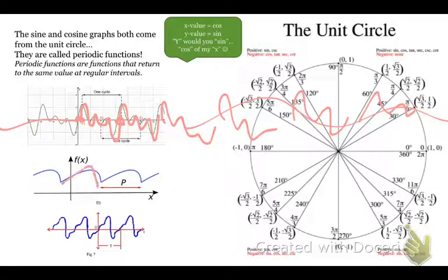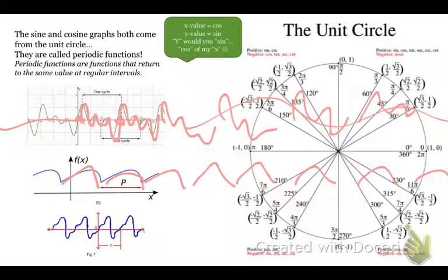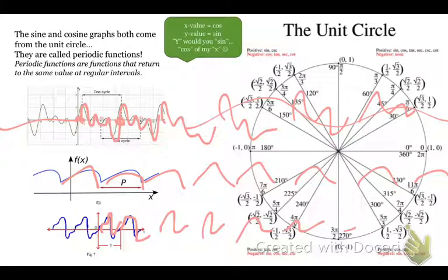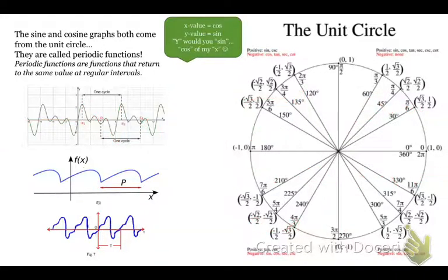Same thing here — one, two, three — that just continues like this. And this one is not as pretty, but it's still just making the same shape over and over again. A periodic function is a function that returns back to the same point over and over again. That's how all these trig functions are.